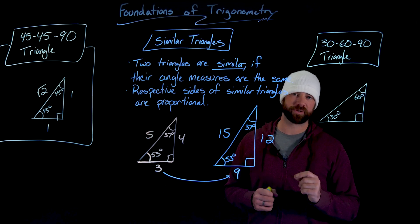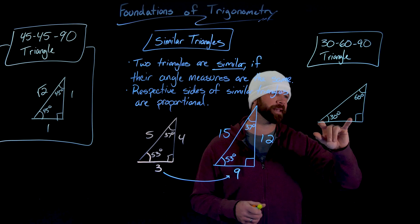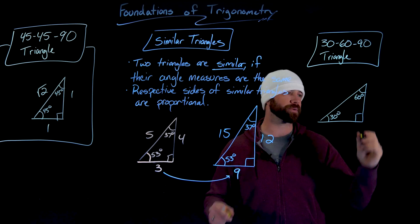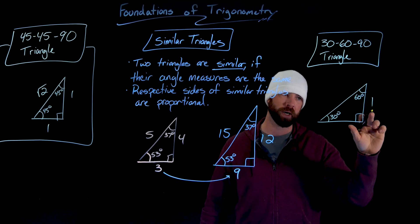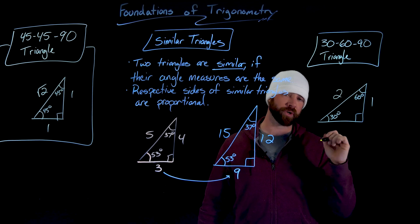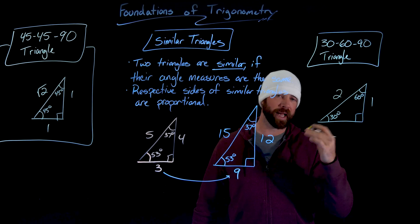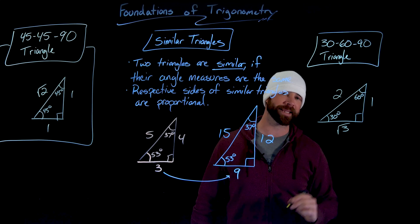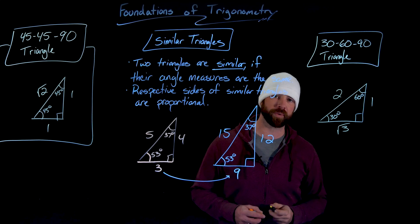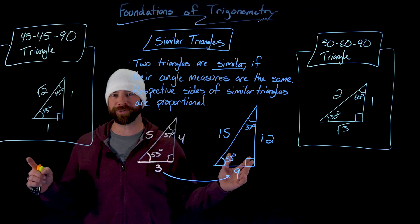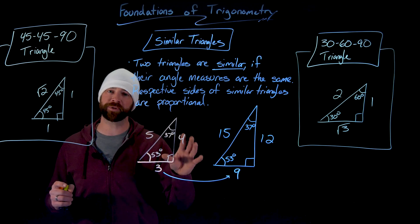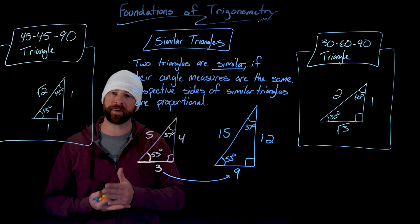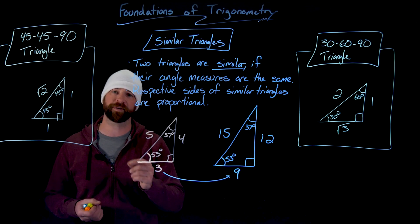Our second special triangle is the 30-60-90. The relationship between its sides is: if the short leg is 1, the hypotenuse is always twice that length — which is 2. Using the Pythagorean theorem with those known sides, we find the remaining leg is the square root of 3. These two triangles and the idea of similar triangles are the absolute foundation for building our trigonometric functions.